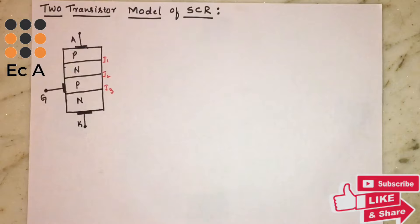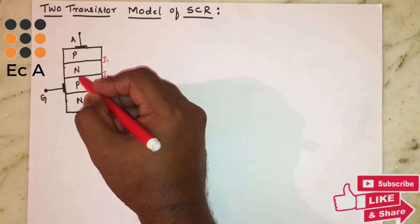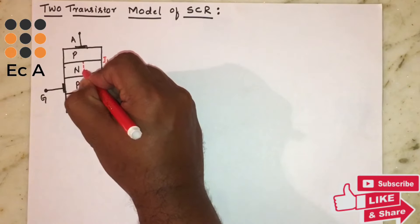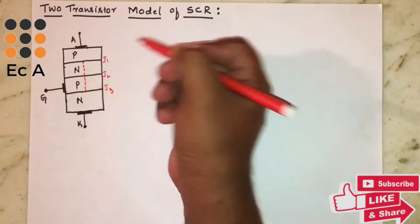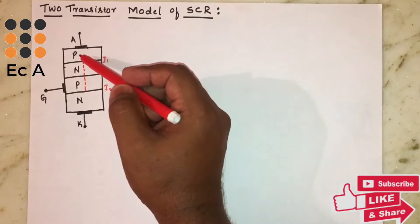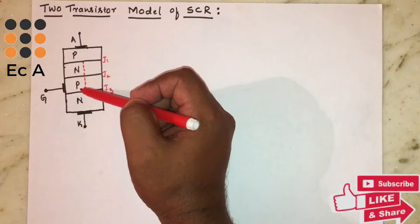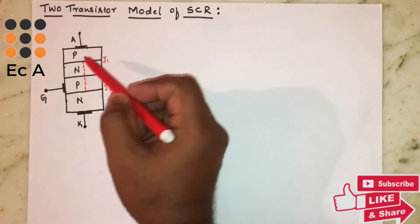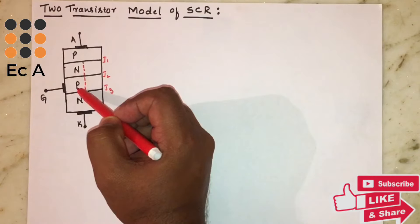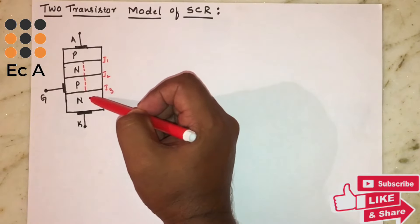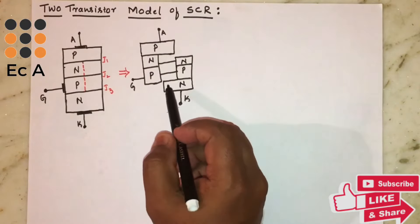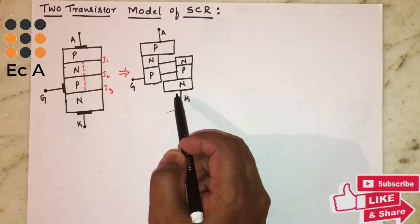Now, if the middle N and P region of the SCR is divided into two halves, we can observe that it looks like two transistors are connected with each other. So this section is P, this is N, and this is P region — and N, P, and N region — as you can see here, it looks as if two transistors are connected with each other.